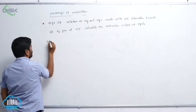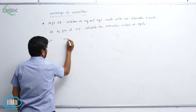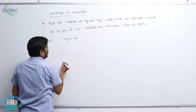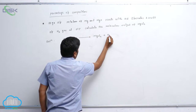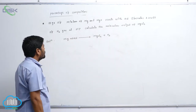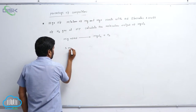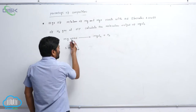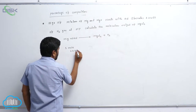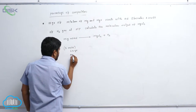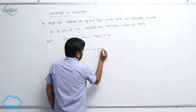First, we balance the equation. Magnesium reacts with hydrochloric acid: Mg + 2HCl converts into magnesium chloride plus H₂ gas. So one mole of magnesium — that is 24 grams — liberates one mole of H₂ gas, which occupies 22.4 liters at STP.